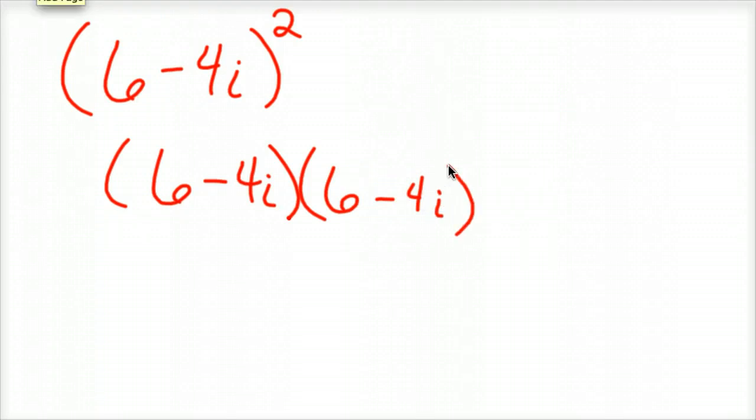Don't just square the 6 and square the 4 and expect to be done. No. You have to write both complex numbers out and then multiply them. And so you would have 36. I mean, try it before you, you know, hit stop. Give this a shot. See if you know what you're doing.